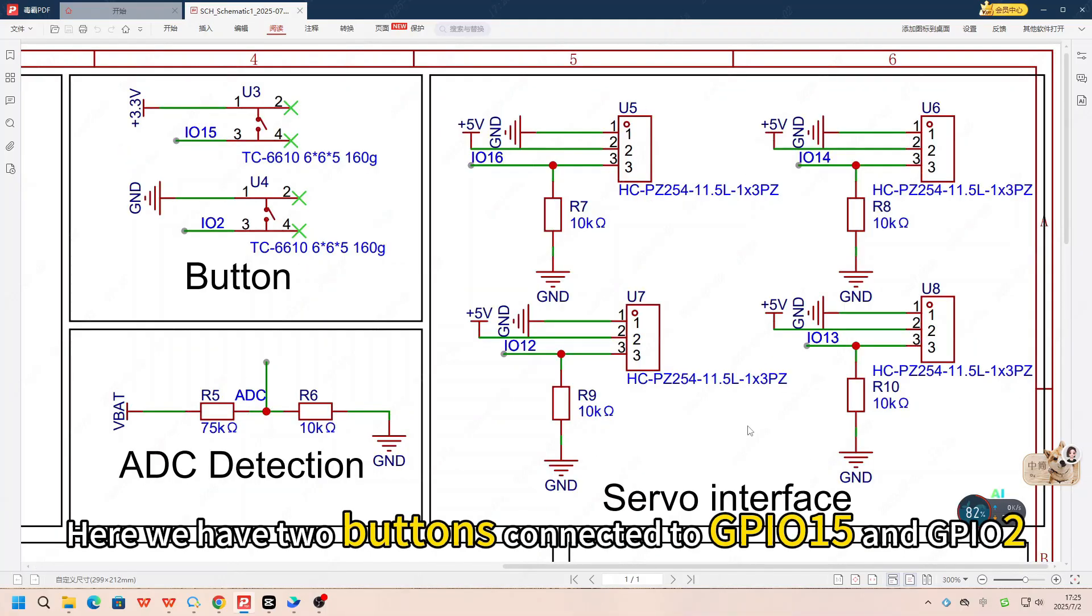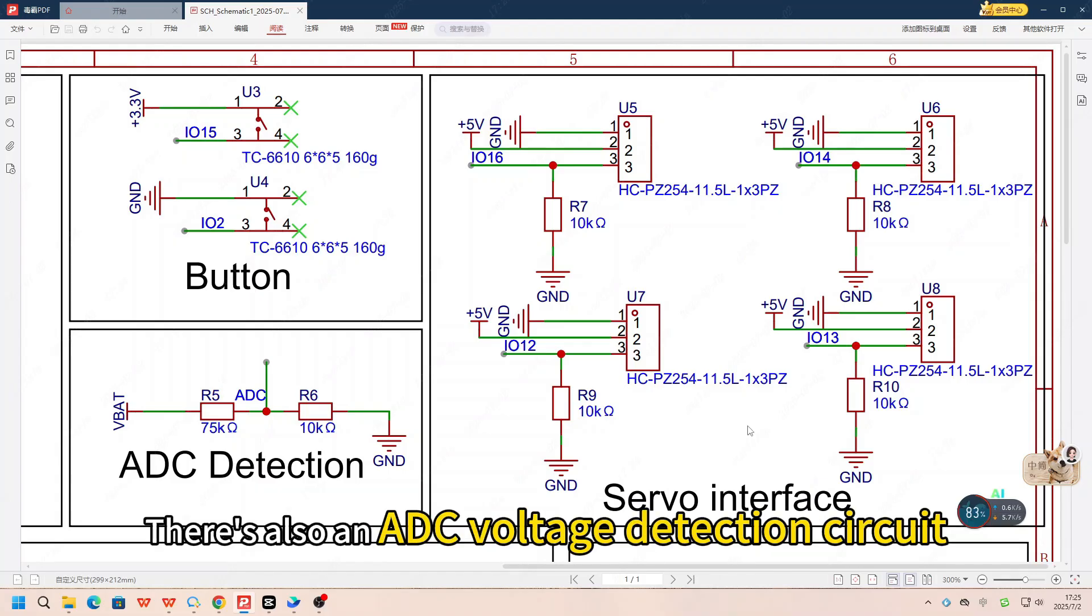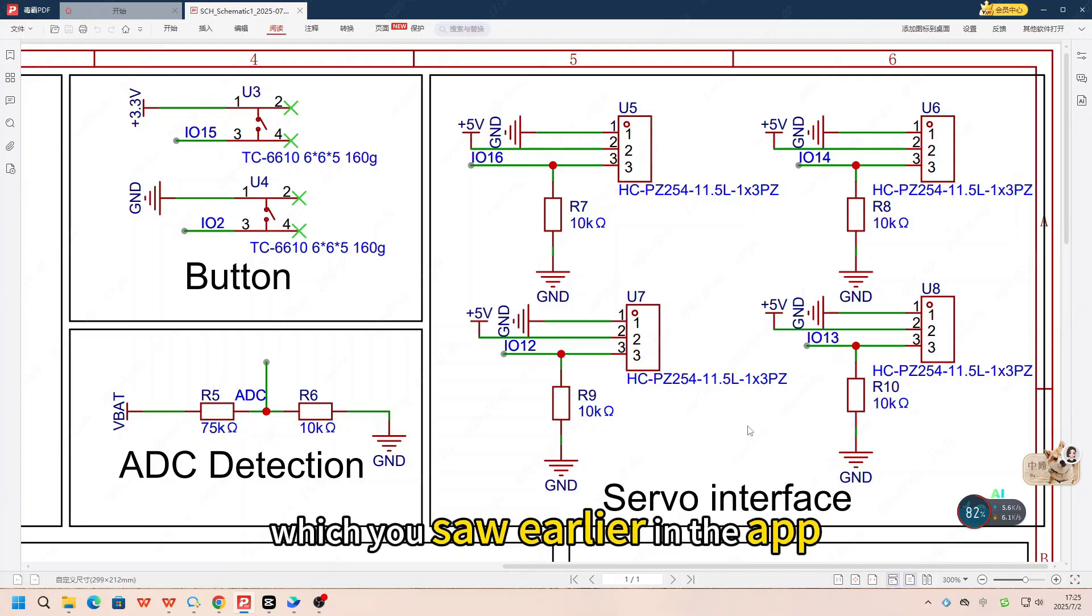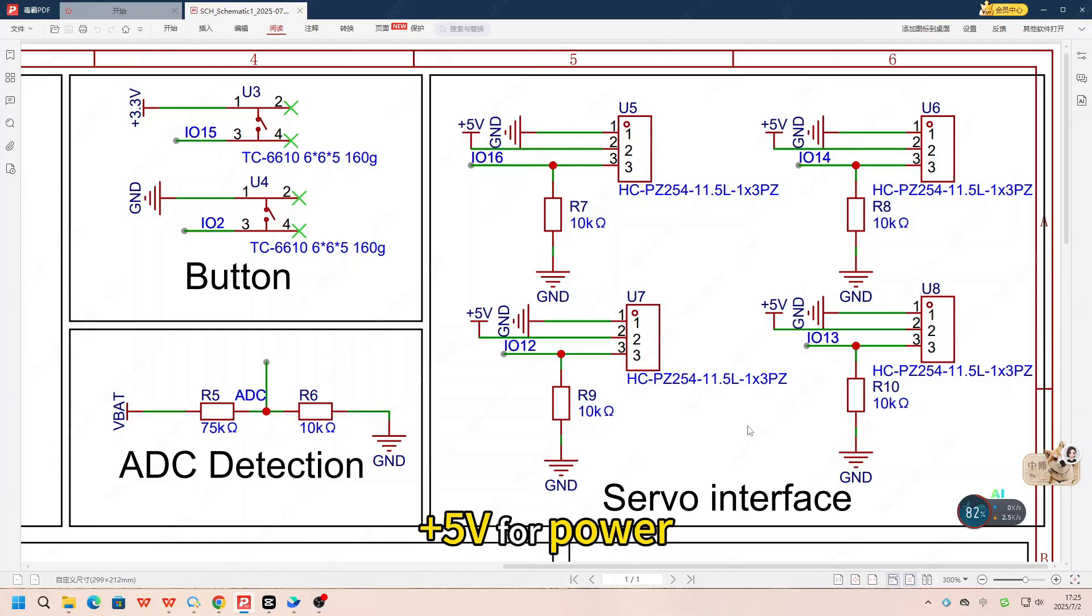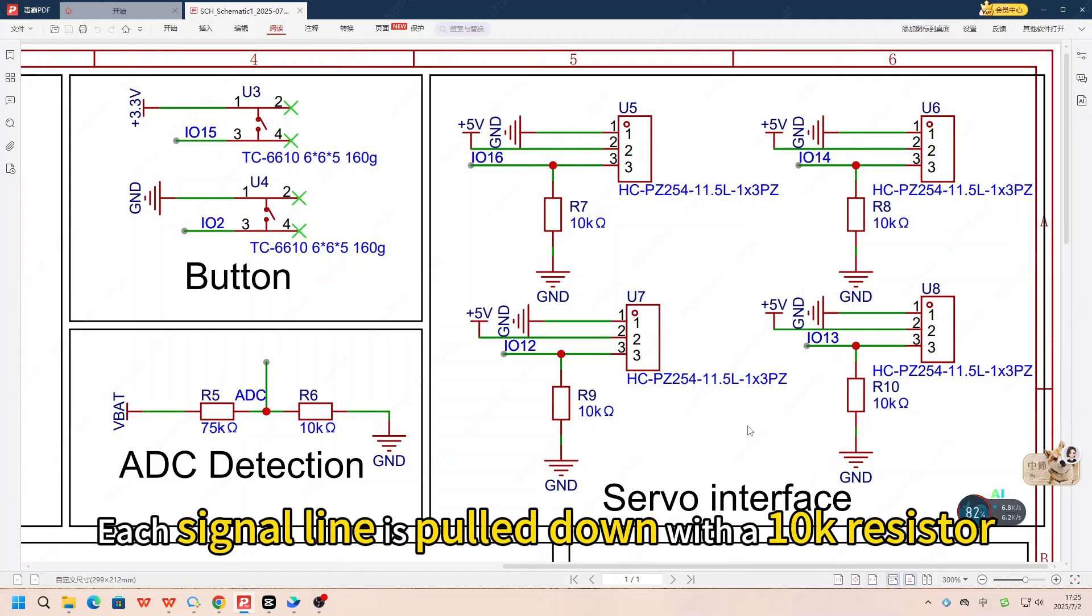Here we have two buttons connected to GPIO15 and GPIO2. There's also an ADC voltage detection circuit, which you saw earlier in the app. Now the four servos, these control the robot dog legs. Each servo has three wires, GND, plus 5V for power, and a signal line from an IO pin. Each signal line is pulled down with a 10K resistor.